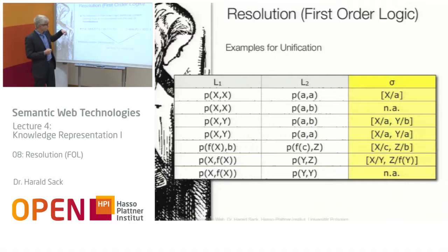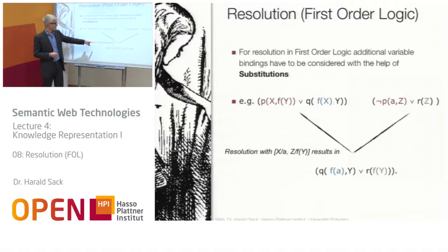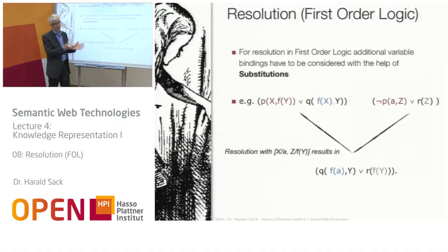Returning to our original problem: the two clauses are easily unifiable. First, substitute x with constant a, then substitute z with function f(y). With these substitutions we can perform a resolution step because we now have a literal and its negation, which can be resolved.